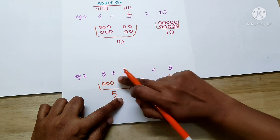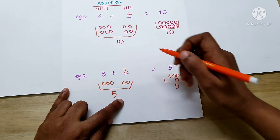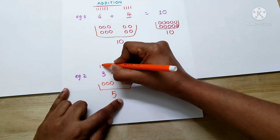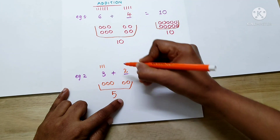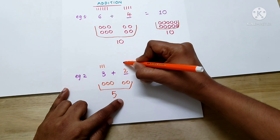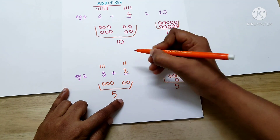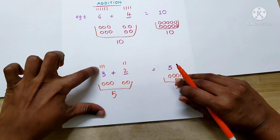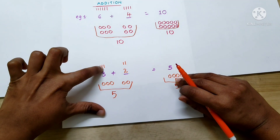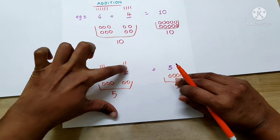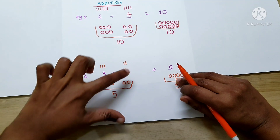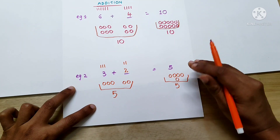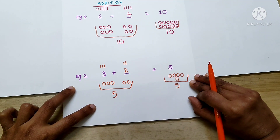Now let's check whether this equation is correct. We have 3 plus 2. Let's see the total number of balls: 1, 2, 3, 4, 5. Yes, we got the number 5, so the equation is correct.